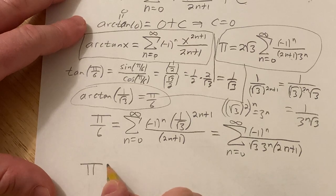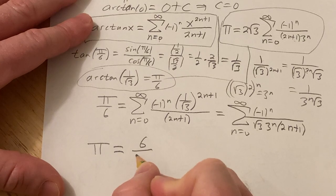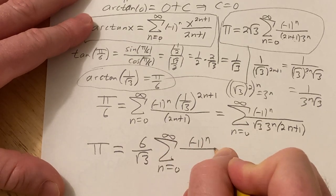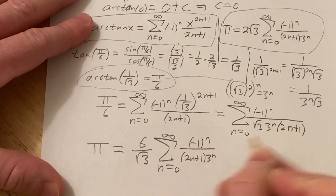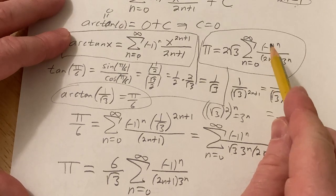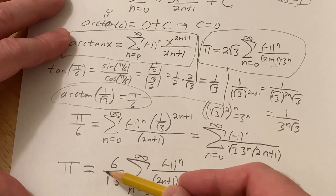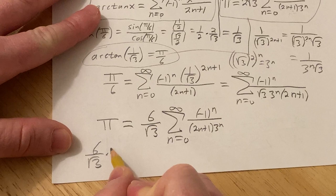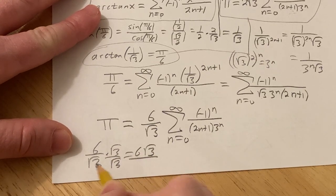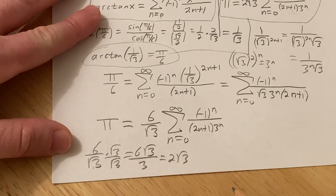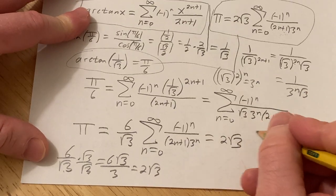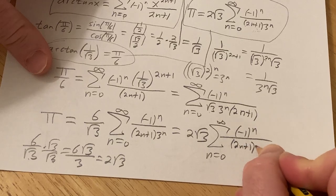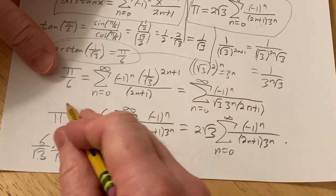Multiplying both sides by 6, we get pi equals 6 over root 3 times the infinite sum as n runs from 0 to infinity of negative 1 to the n over (2n plus 1) times 3 to the n. And you can see it's almost what we need. The only issue is 6 over root 3, but you can rationalize that: 6 over root 3 times root 3 over root 3 equals 6 root 3 over 3, which is 2 root 3. So pi equals 2 root 3 times the infinite sum as n runs from 0 to infinity of negative 1 to the n over (2n plus 1) times 3 to the n.